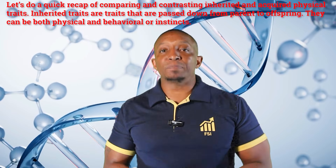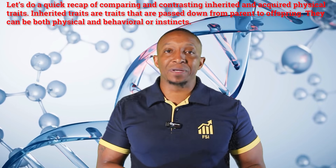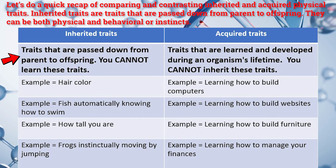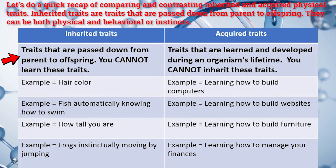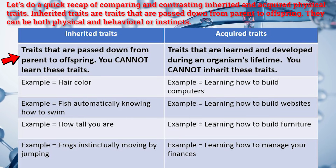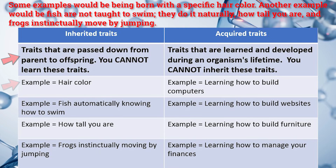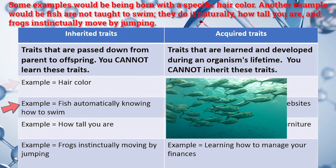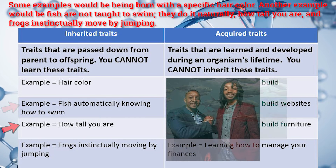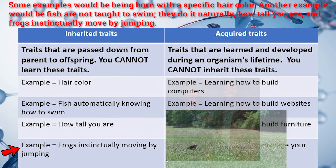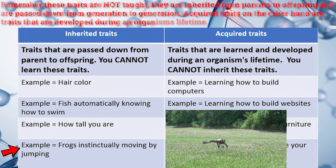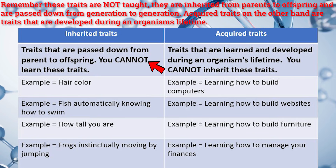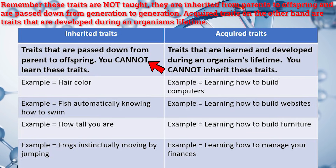Let's do a quick recap of comparing and contrasting inherited and acquired physical traits. Inherited traits are traits that are passed down from parents to offspring. They can be both physical and behavioral or instincts. Some examples would be being born with a specific hair color, fish are not taught to swim — they do it naturally, how tall you are, and frogs instinctually move by jumping. Remember, these traits are not taught; they are inherited from parents to offspring and are passed down from generation to generation.